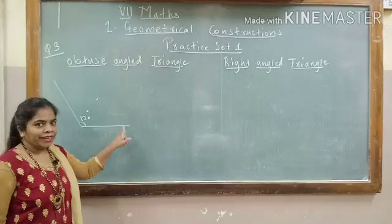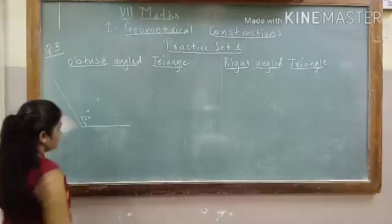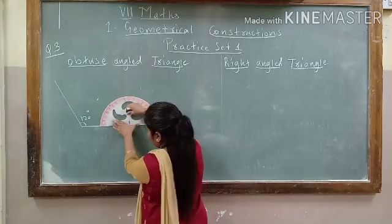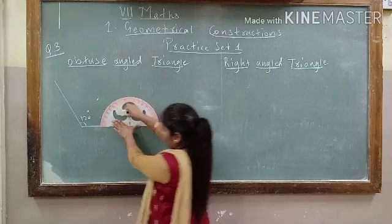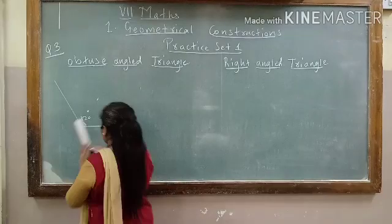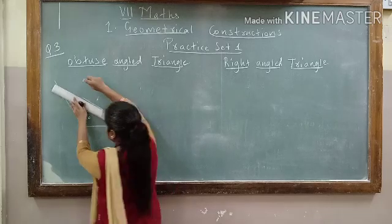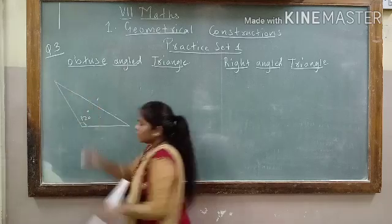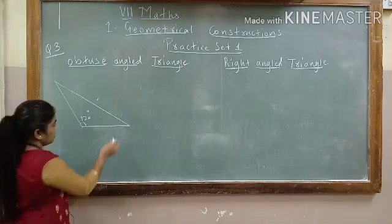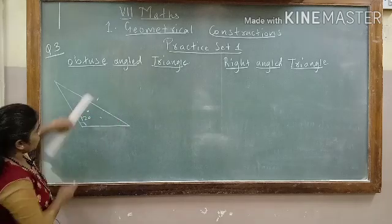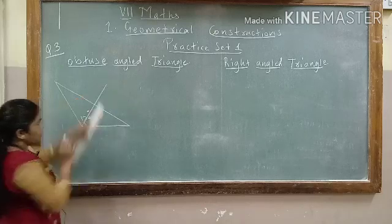Now, from here, we will take a measure of 20 degrees and we will also mark half of it, which is 10 degrees. Now, this is our 20 degrees — half and half, 10 and 10. This is my half. This was my 60 degrees.